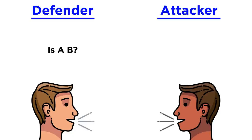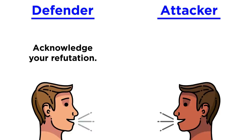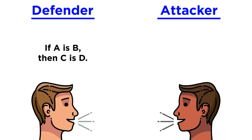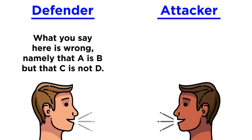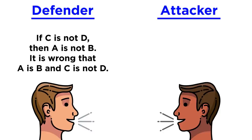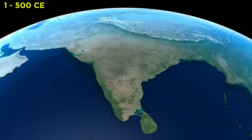The abstract form of that pattern is: Defender: 'Is A, B?' Attacker: 'Yes.' 'Is C, D?' Attacker: 'No.' Defender: 'Acknowledge your refutation. If A is B, then C is D. What you say is wrong — namely that A is B but C is not D. If C is not D, then A is not B. It is wrong that A is B and C is not D.' Further developments in the first five centuries of the Common Era helped improve syllogisms in India toward more simple and effective formats.